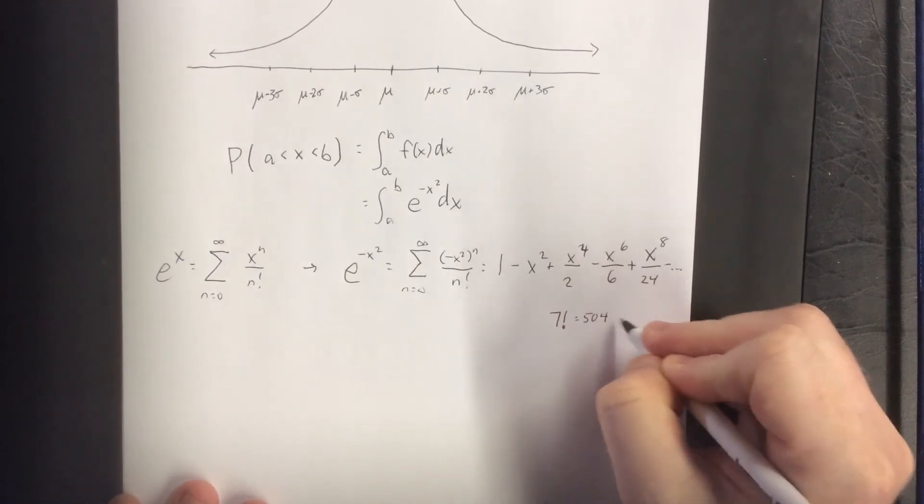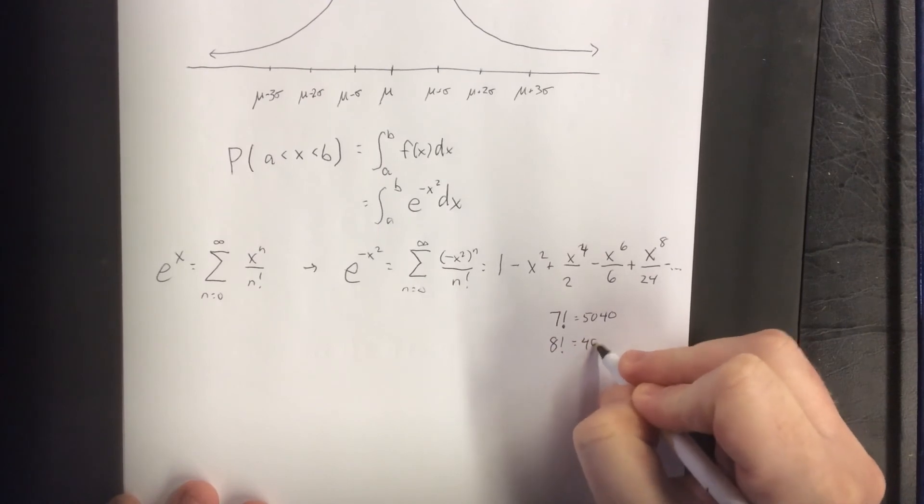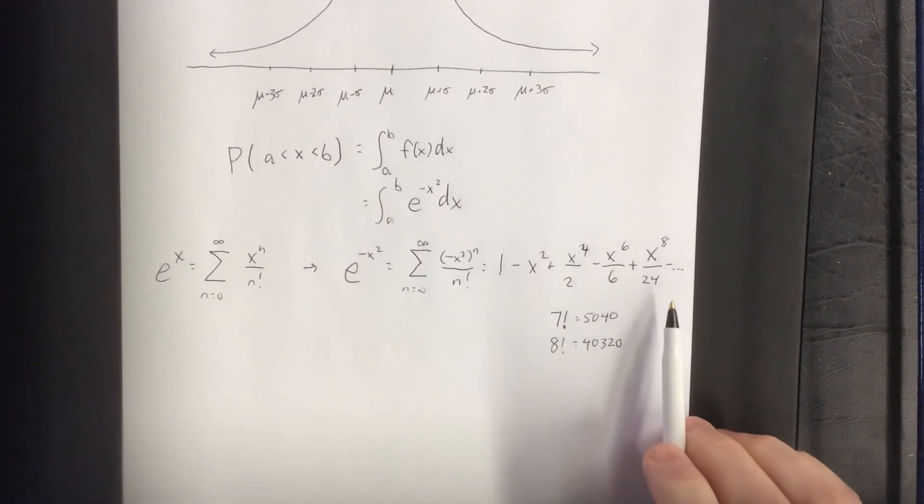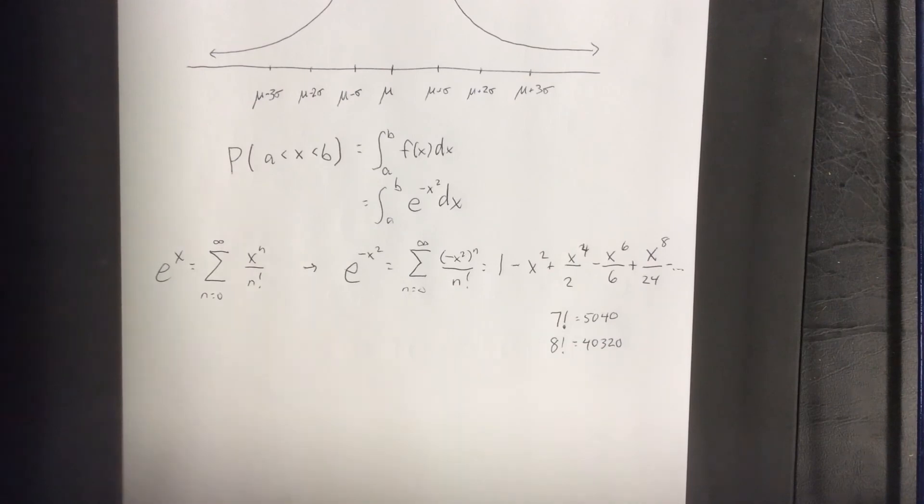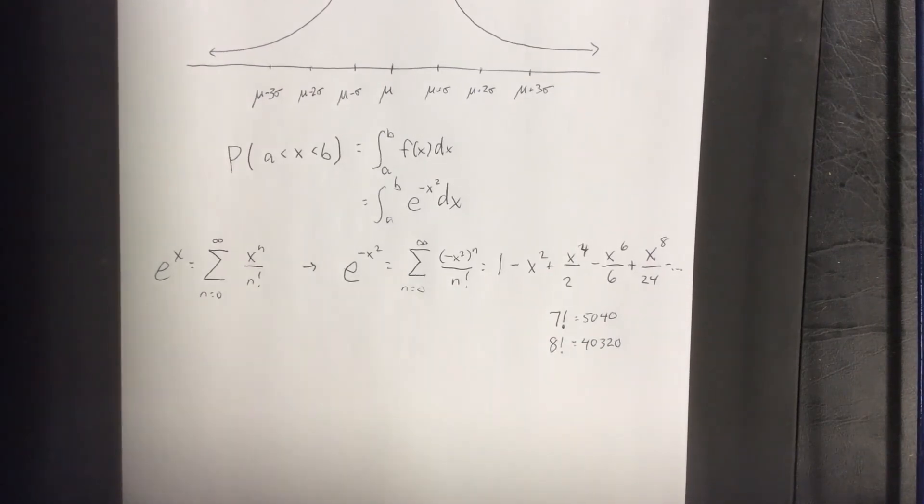7 factorial is equal to 5,040, whereas 8 factorial is equal to 40,320. So once your denominators start getting that big, it's possible to get an answer accurate to four decimal places without actually integrating e to the negative x squared. So this is just one place where things like this show up.